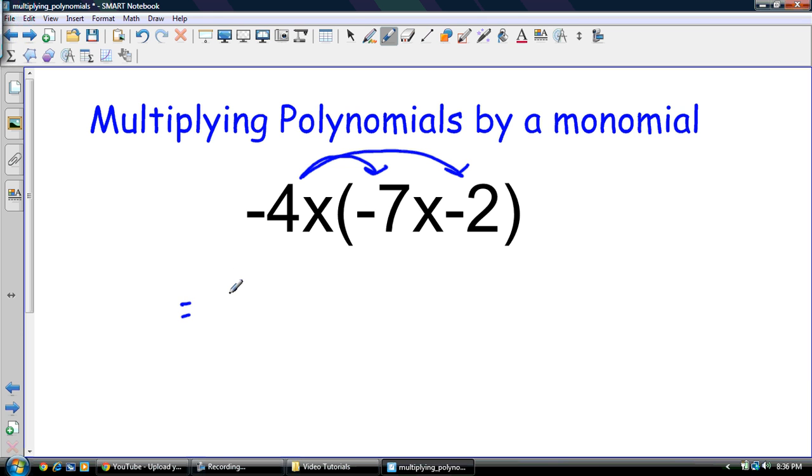And I go negative 4x times negative 7x plus negative 4x times negative 2. So I have, again, I multiply the coefficients, so negative 4 times negative 7, that's 28. But now I have this predicament, I have x times x. Well, what you really should know is that x times x is x squared.